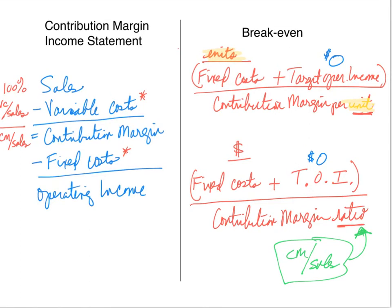Also, we can recognize that at breakeven, contribution margin and fixed costs will be equal, because that's the only way we can get an operating income of zero. Now let's look at some examples using the breakeven formula and the contribution margin income statement.